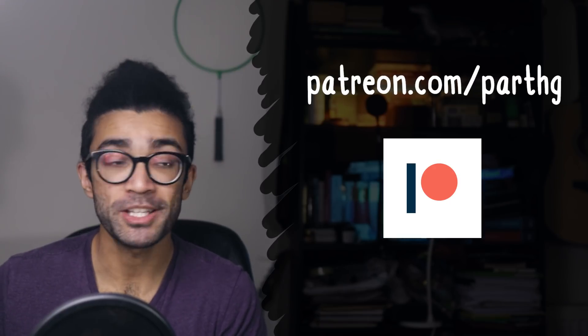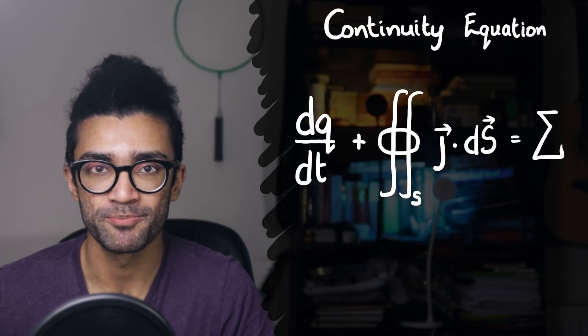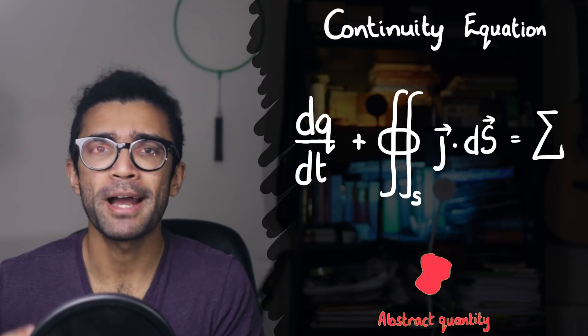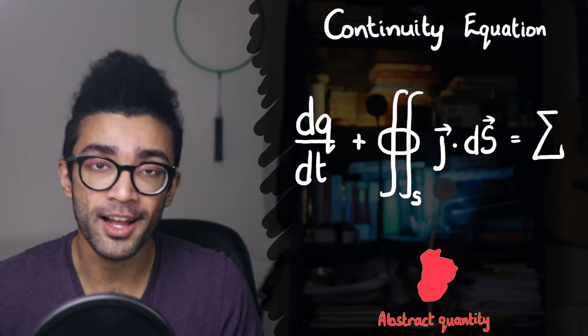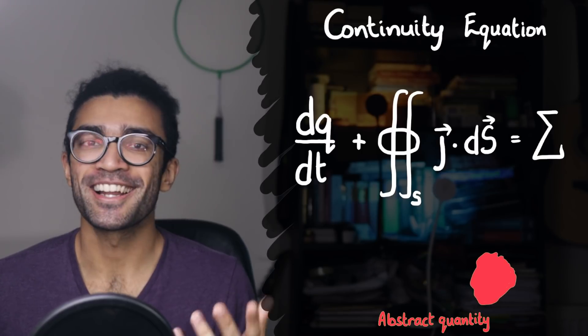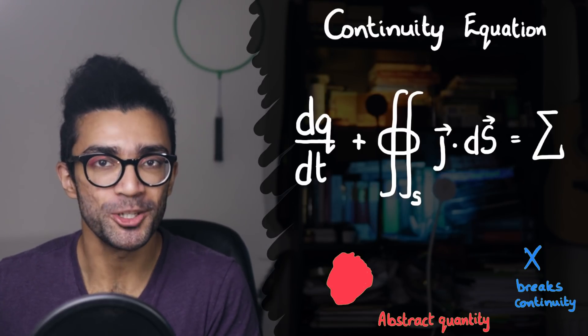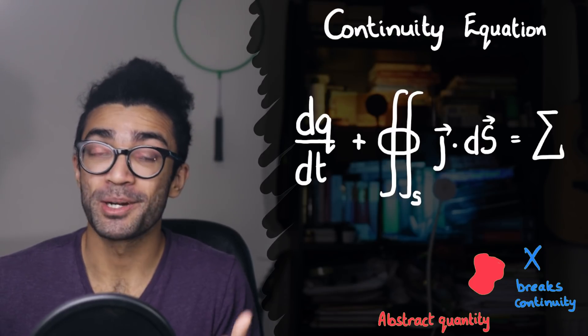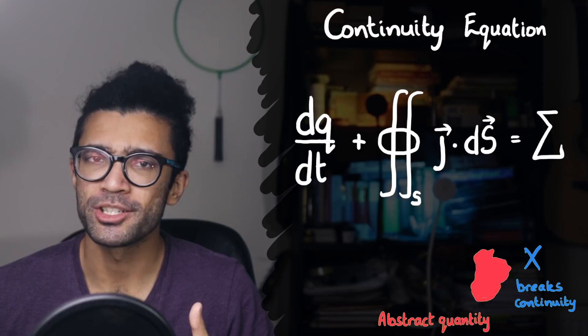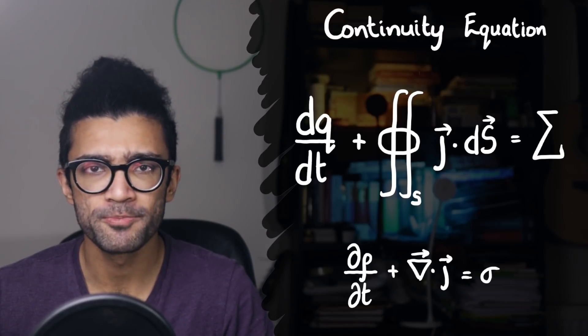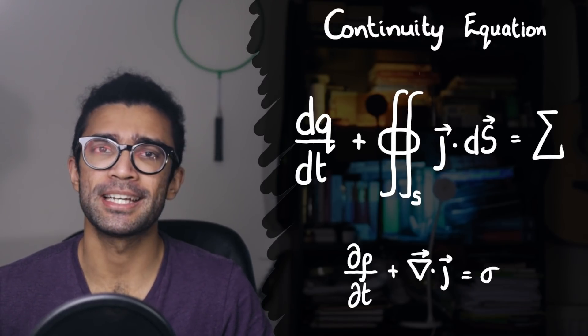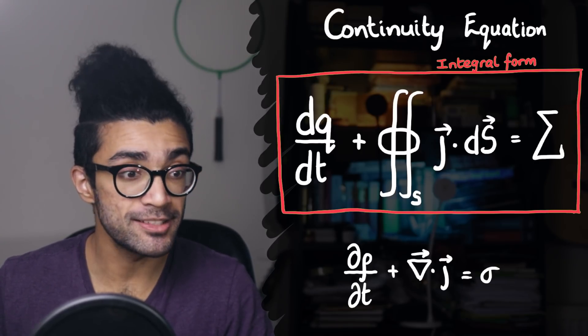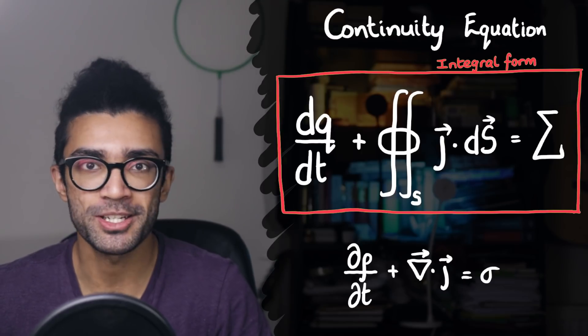Now, the equation that we're studying today is known as the continuity equation, and for good reason. It basically deals with the flow of some abstract quantity over time and through space. The way that I like to think about it is that it makes sure that there are no continuity errors for whatever phenomenon we happen to be studying, although that's just my silly little interpretation. The equation can be written in a couple of different forms, but for the purposes of this video we'll be sticking with this form here, the integral form, because I think it's the most intuitive and easy to visualize way to understand this equation.